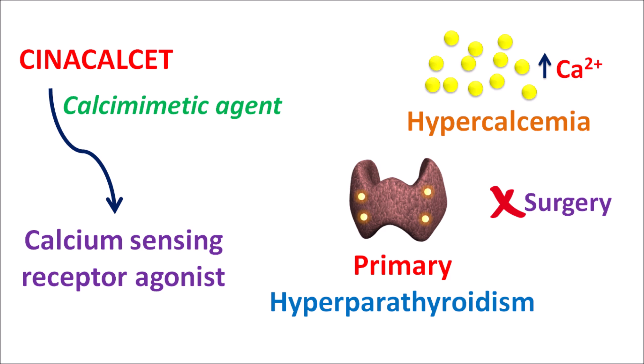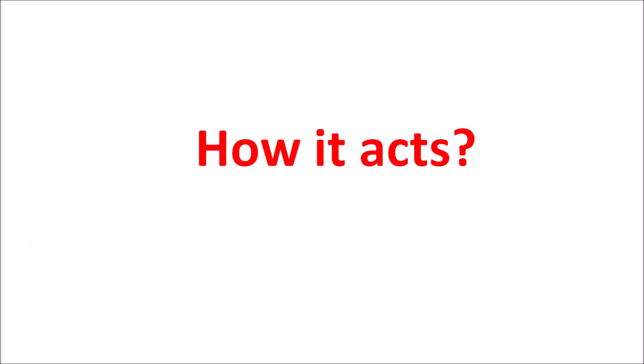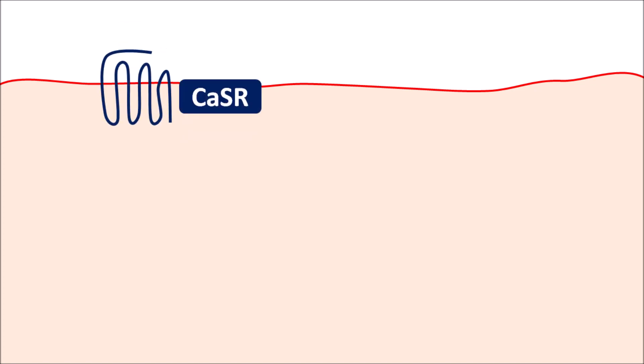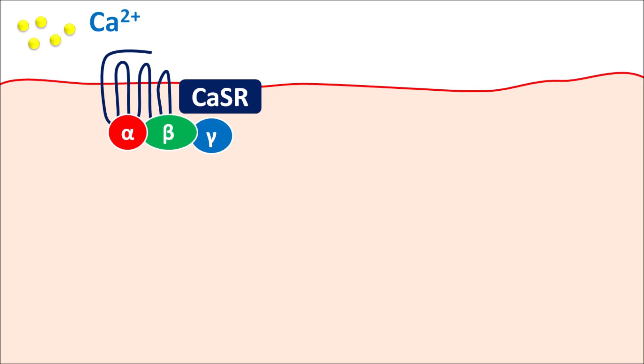Today in this video, let us discuss the important precautions, side effects, mechanism of action, and dosing of this drug. First of all, let us see how this drug acts. On the chief cells of the parathyroid gland, calcium-sensing receptors are present. These are G protein-coupled receptors coupled with alpha, beta, and gamma subunits. The ionized calcium can bind to these receptors.